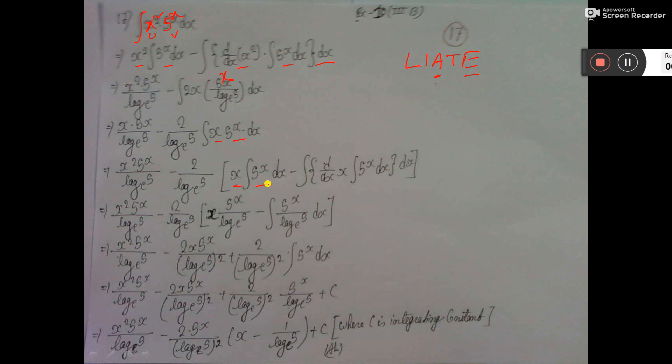So, u integration v dx minus d dx of u integration v dx total dx. Here again, 5 to the power x integration is 5 to the power x by log 5 base e minus, here this one you see, d dx of x is 1 that is not written.